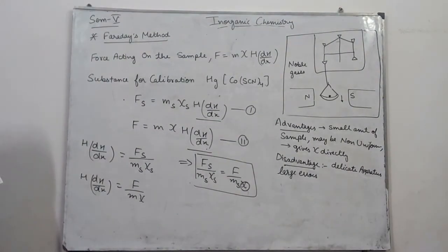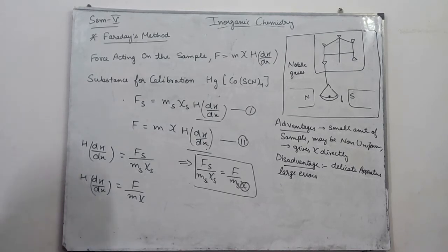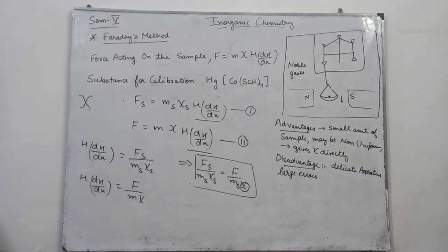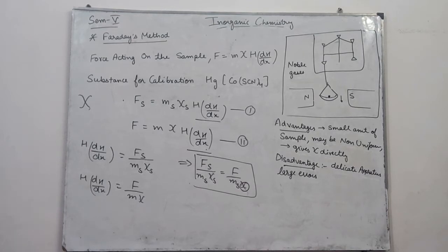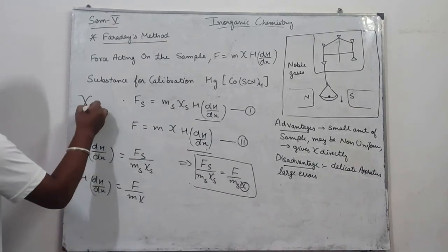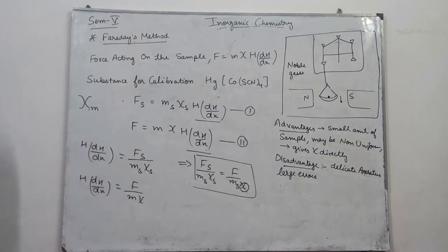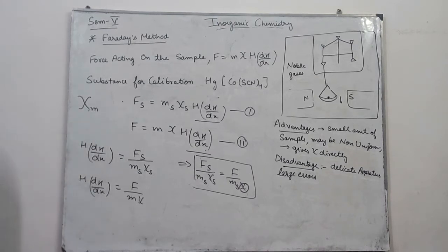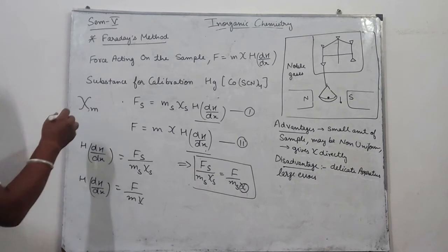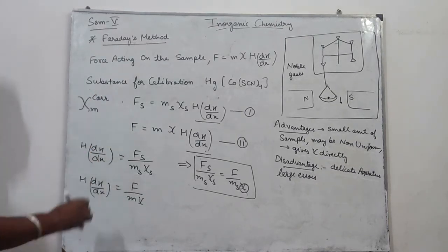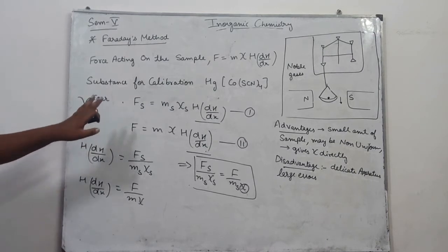Substances को per mole के according calculate करते हैं - मतलब amount per mole consider करते हैं। इसके लिए symbol है chi_m जो magnetic susceptibility per mole है, इसे molar susceptibility भी कहते हैं। कई जगह आप इसके ऊपर कुछ और भी देखोगे, उसके बारे में बता रहा हूं।